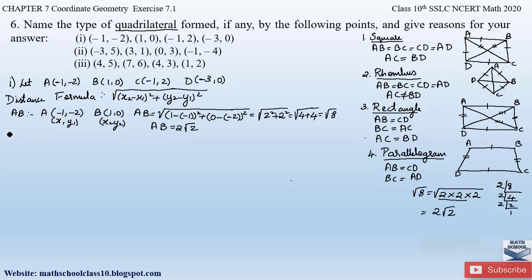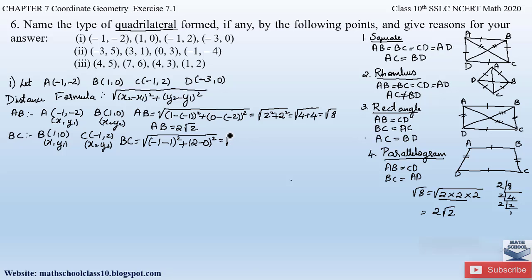Similarly, let us find side BC. Assuming B as (x₁, y₁) = (1, 0) and C as (x₂, y₂) = (−1, 2): BC = √[(−1 − 1)² + (2 − 0)²] = √[(−2)² + (2)²] = √(4 + 4) = √8 = 2√2. So side BC is also equal to 2√2.